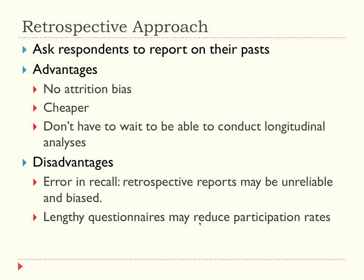I'm going to focus today on the retrospective approach, which I think is more accessible and affordable. With a reasonable grant — the kind an average assistant professor or even some graduate students can get — you can do this kind of research. You ask the respondent to report on their own past. There's no attrition bias because you only have to find the person once. It's much cheaper and you don't have to wait for data to come in. But there are also major disadvantages: error in recall.